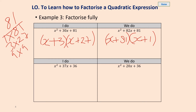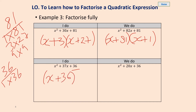Let's have a go at this one. This time I need to get 36 as the product and two numbers are going to make 36. I've got 1 and 36 — will that give us 37? Yes it will. So x plus 36 and x plus 1.